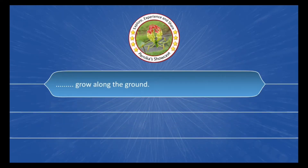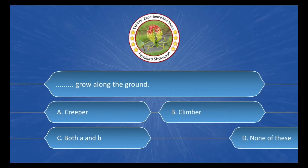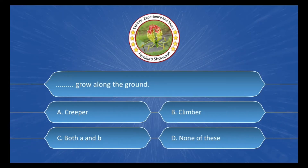___ grow along the ground. The options are: A. Creeper, B. Climber, C. Both A and B, D. None of these. The correct answer is Option A: Creeper.